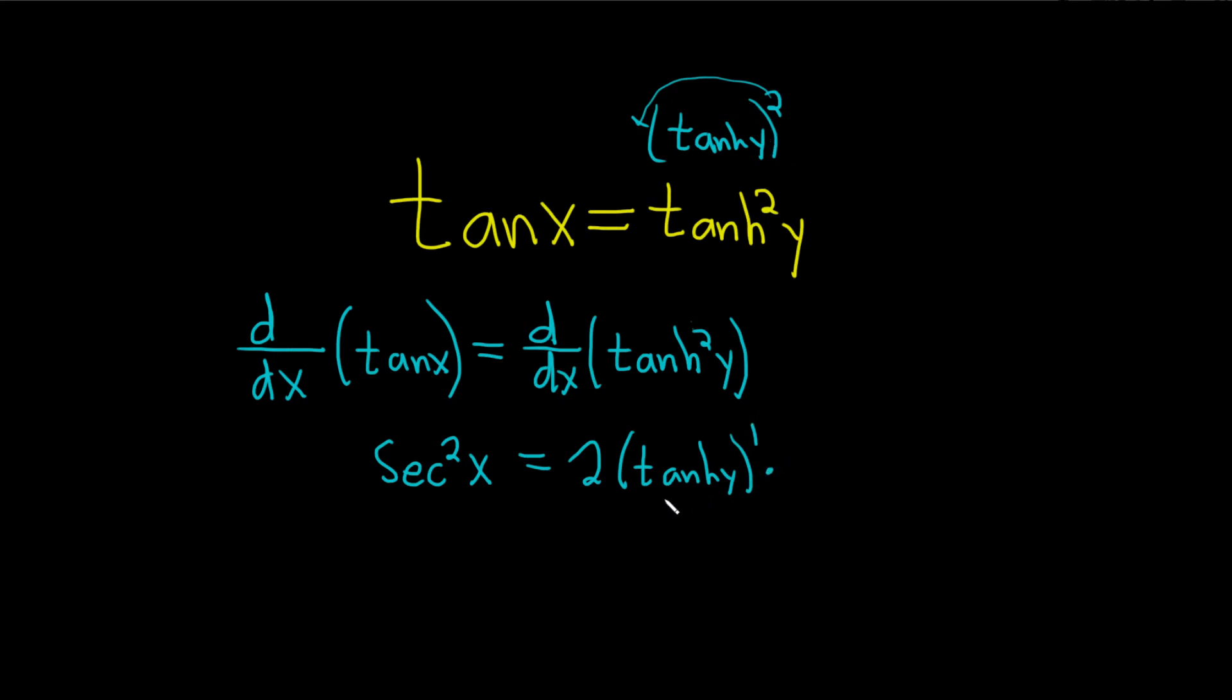And then you multiply by the derivative of the inside function, which is the derivative of the hyperbolic tangent. And that's going to be the hyperbolic secant squared of y. And then, again, you have to multiply by the derivative of the inside. The inside function is y, and its derivative is just dy/dx. So it's another chain rule.